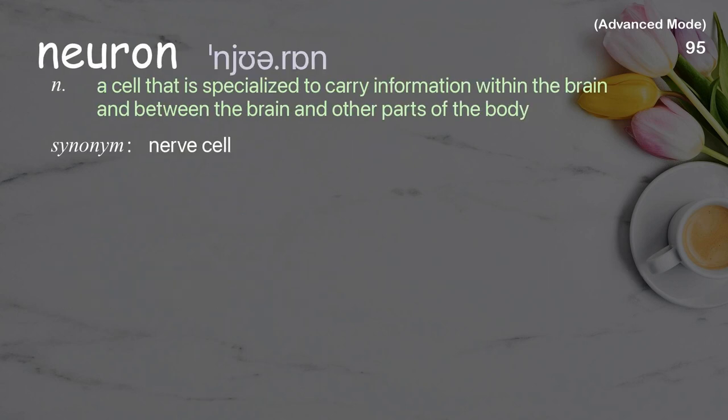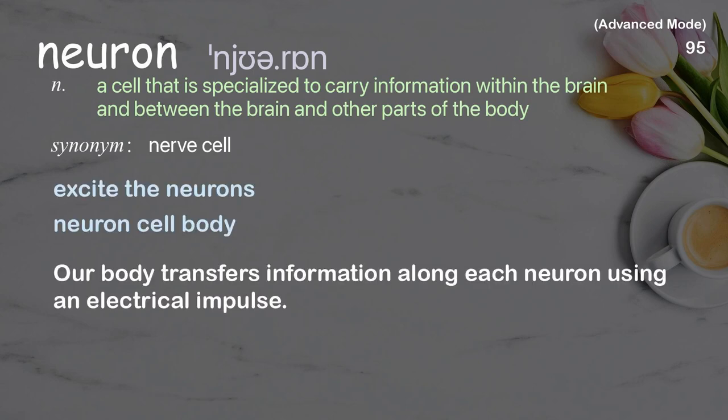Neuron: a cell that is specialized to carry information within the brain and between the brain and other parts of the body. Examples: excite the neurons, neuron cell body. Our body transfers information along each neuron using an electrical impulse.